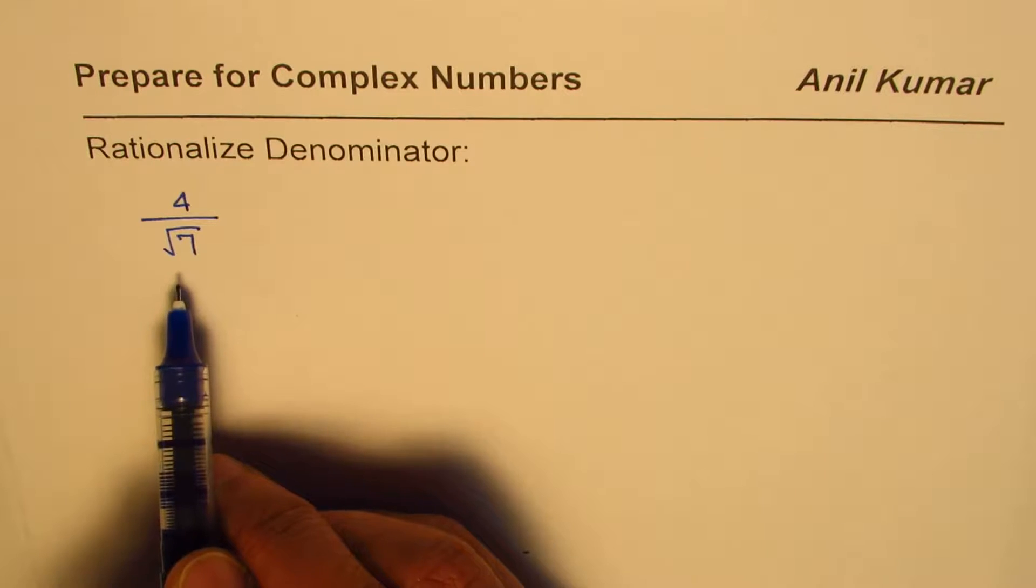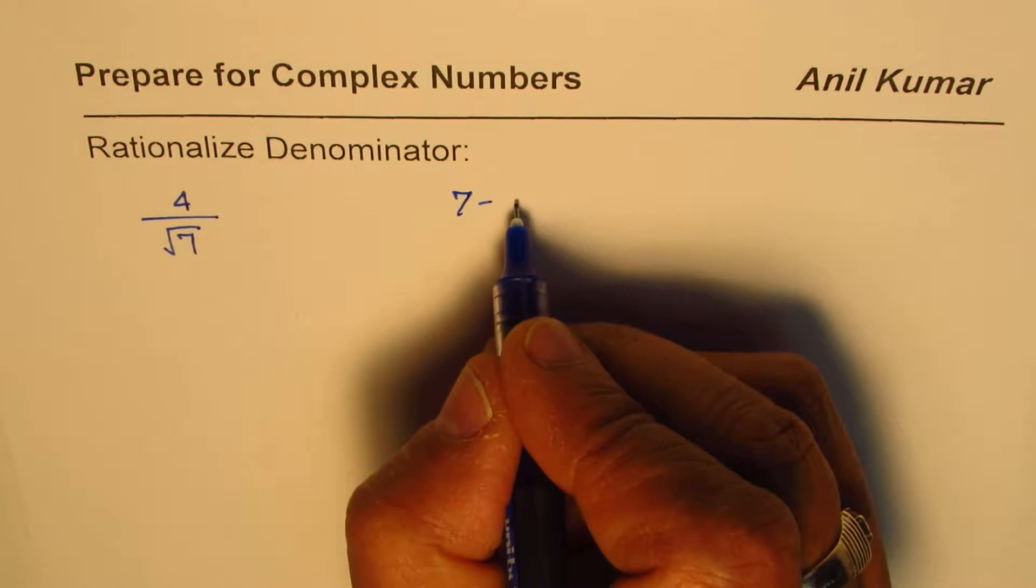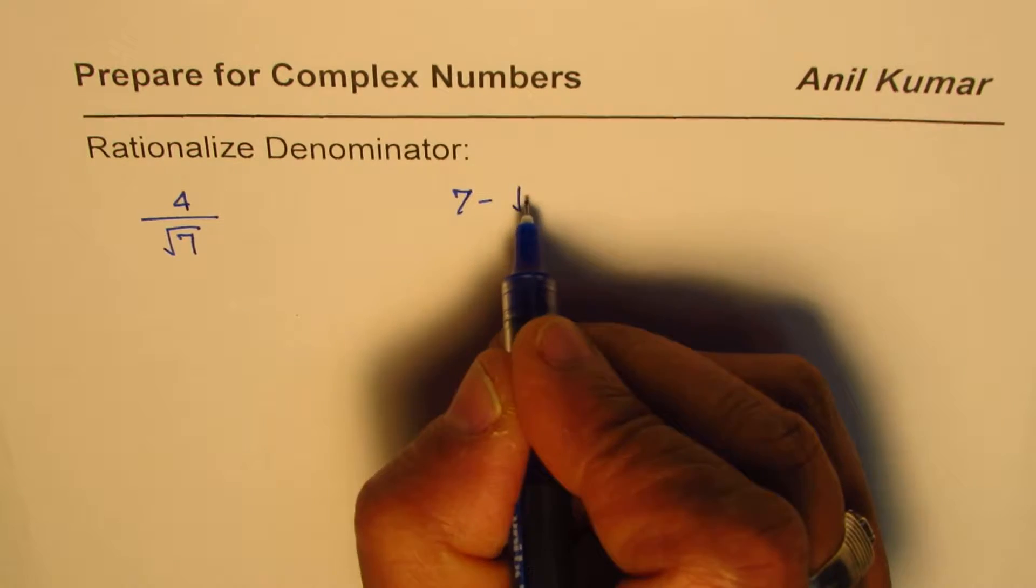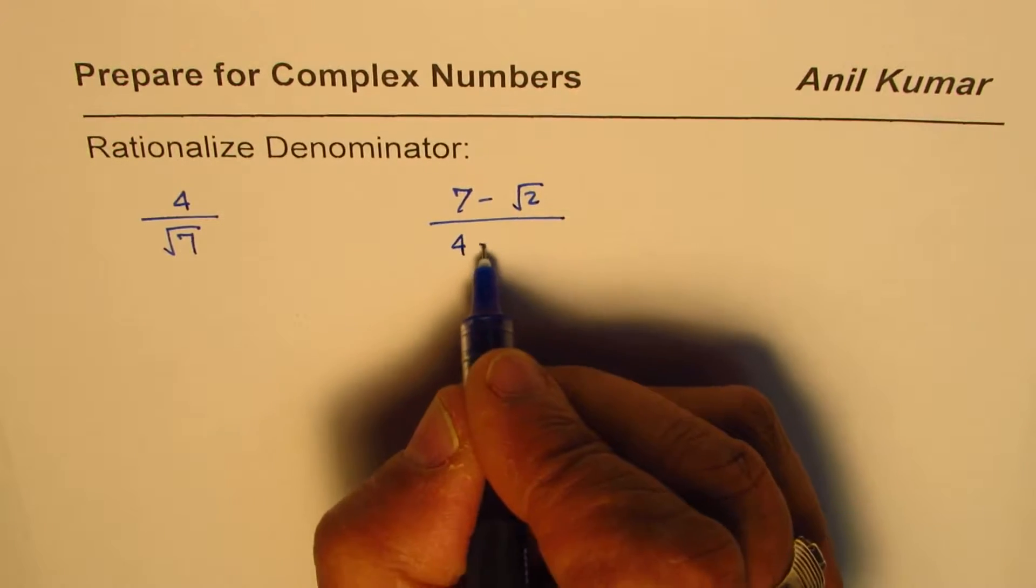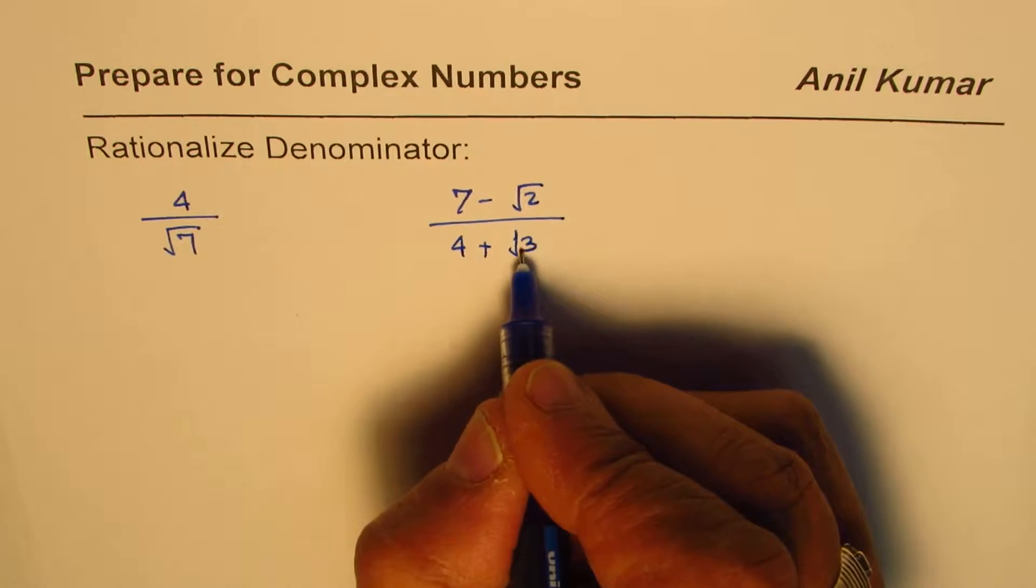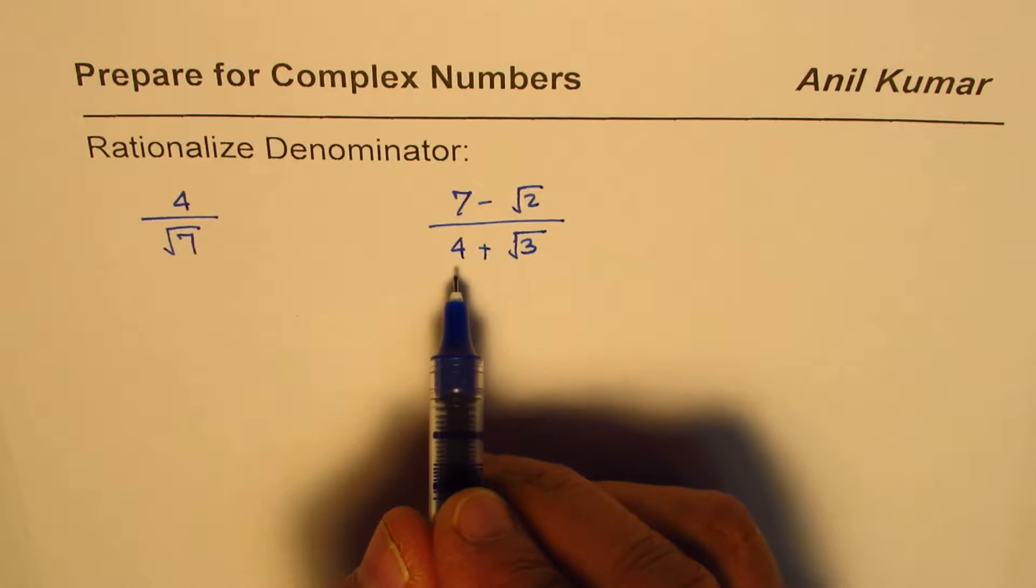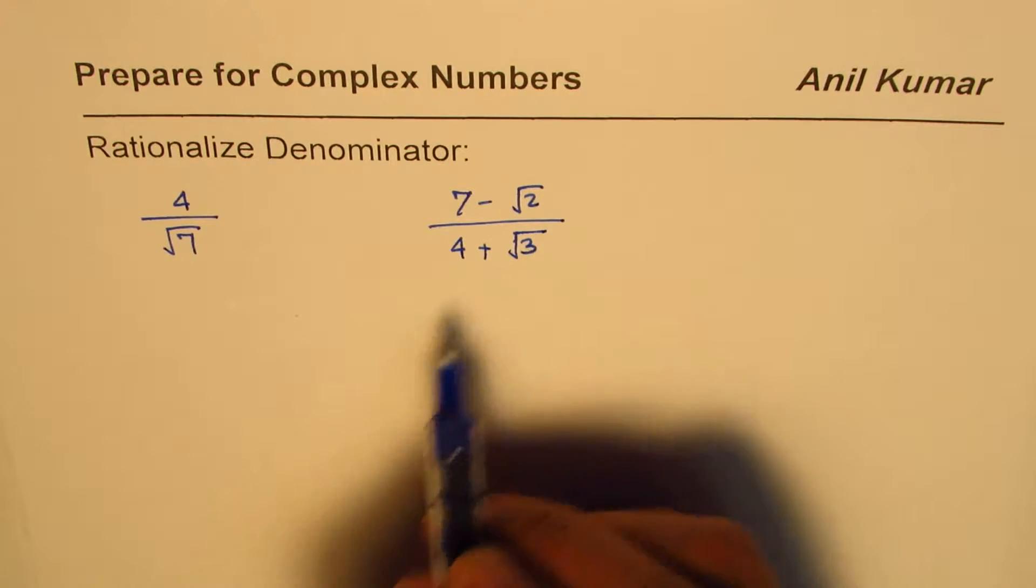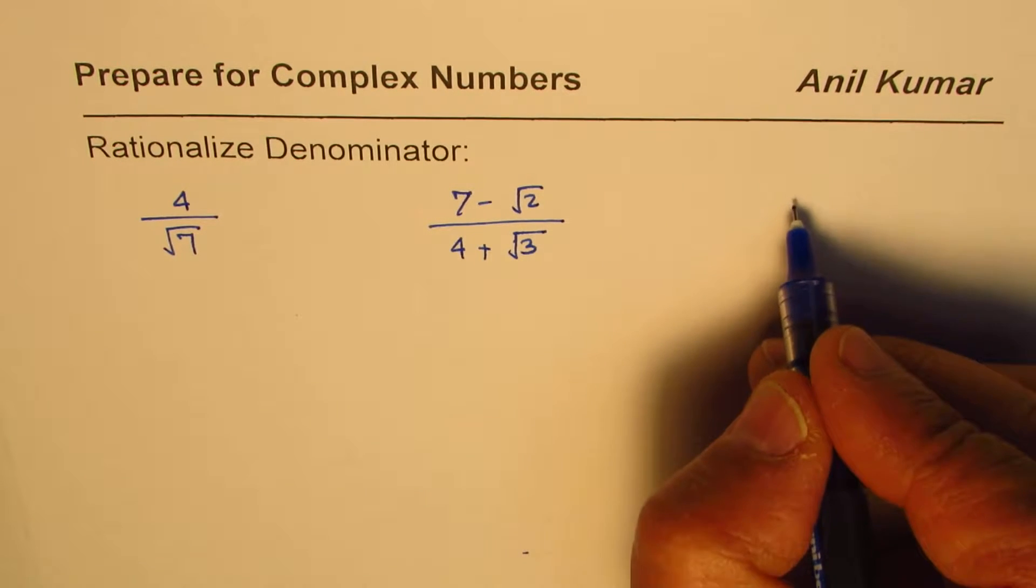We could have something like 7 minus square root of 2 divided by 4 plus square root of 3, for example, and we may be required to rationalize so that we get rid of the square root 3 from the denominator. Let me take a simpler one also. Let's say we have 5 over 2 minus square root 3.